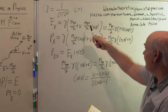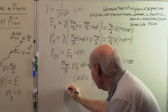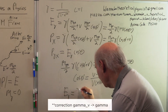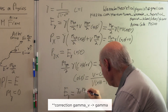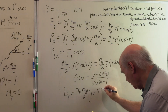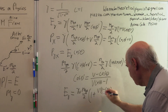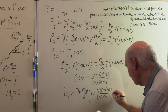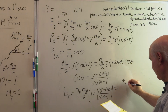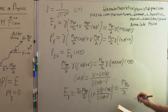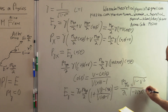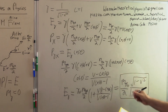Substituting this result back into our formula for the energy, the energy of the photon equals (m pi-zero / 2) * gamma * v * (1 + v * (v - cos(theta)) / (v * cos(theta) - 1)). This simplifies to: E_gamma = (m pi-zero / 2) * sqrt(1 - v²) / (1 - v * cos(theta)). That's our answer — the energy of the photon as a function of the angle theta.